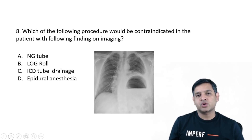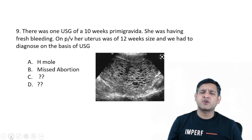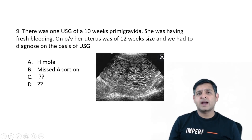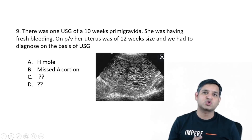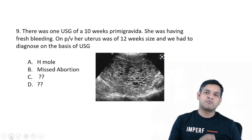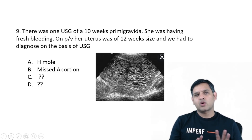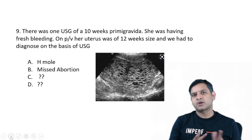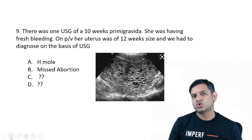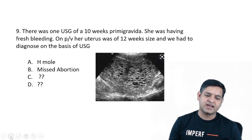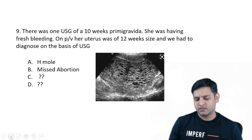There was a straightforward question — a 10-week primigravida with bleeding per vaginum, uterus larger than age on PV examination, and ultrasound showing a bulky uterus with cystic lucencies in almost a snowstorm pattern. I don't think the answer could be anything other than a hydatidiform mole.